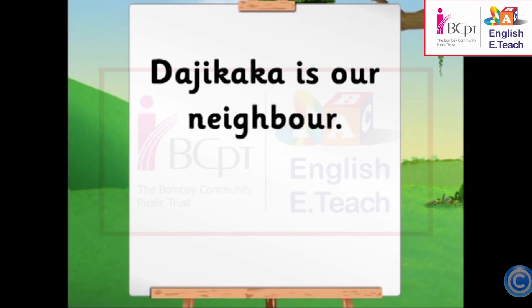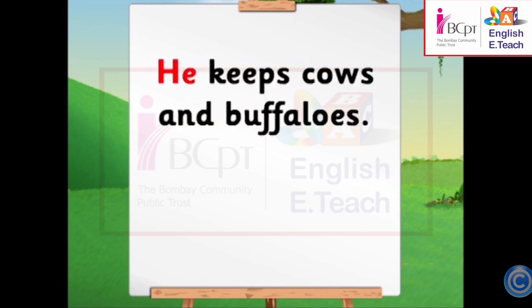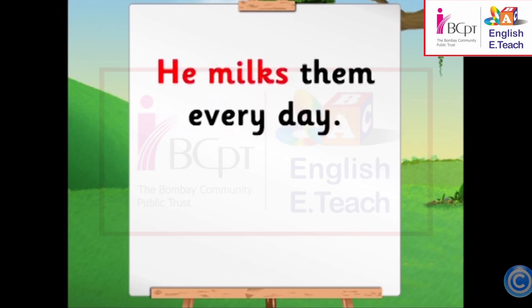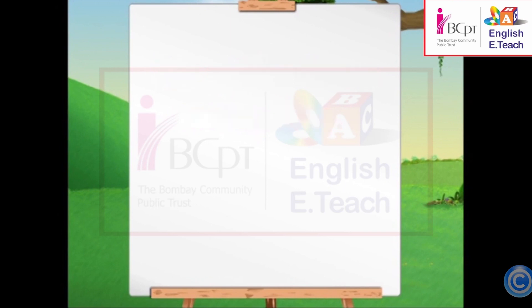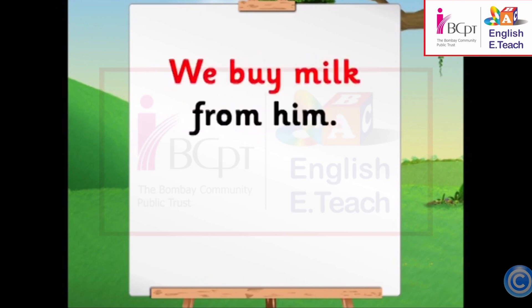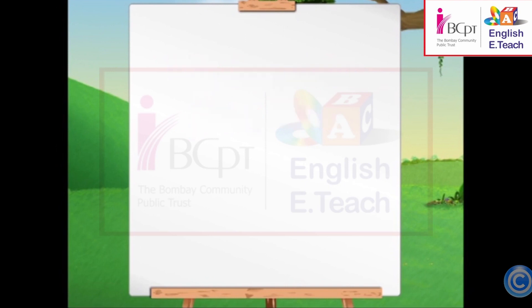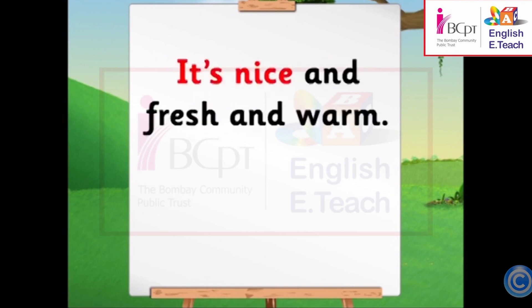Ruchi, read the sentences on the chart. Children, repeat after Ruchi. Daji Kaka is our neighbor. He keeps cows and buffalos. He milks them every day. We buy milk from him. It's nice and fresh and warm.